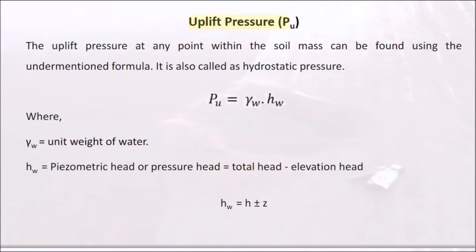Uplift pressure Pu at any point within the soil mass can be found using the formula for hydrostatic pressure. Here γw is the unit weight of water, and hw is the piezometric head or pressure head, equal to total head minus elevation head: hw = h ± ze.